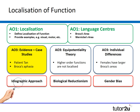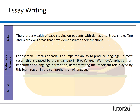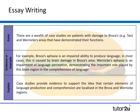For the final evaluation point, I'd keep it simpler: there's a wealth of case studies on patients with damage to the Broca's and Wernicke's areas that demonstrate the functions of these two regions. Broca's aphasia is an impaired ability to produce language caused by brain damage in Broca's area, and Wernicke's aphasia is an impairment in language perception — both demonstrating the importance of these regions in comprehension and production of language. Case studies like these provide evidence supporting the localisation of language in the Broca and Wernicke regions.